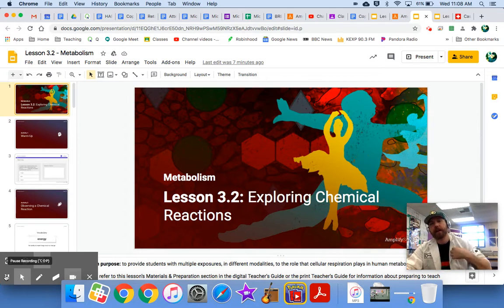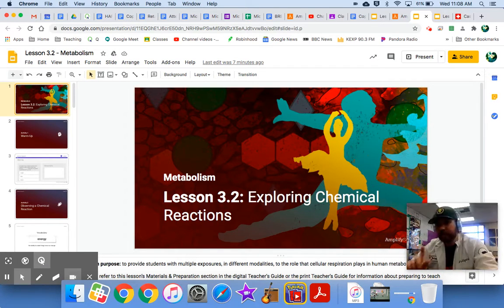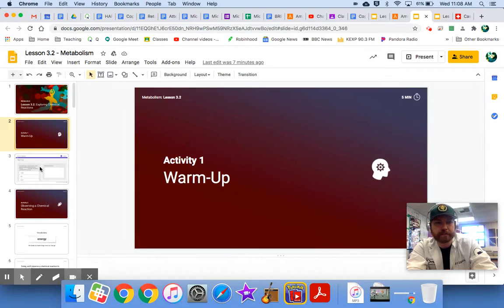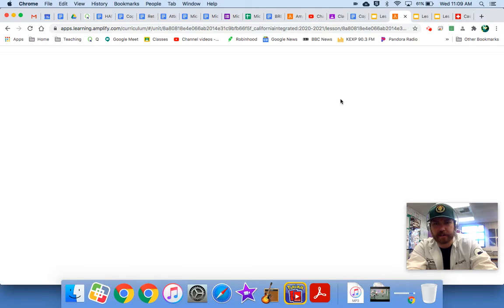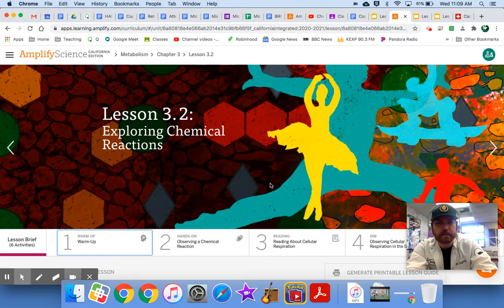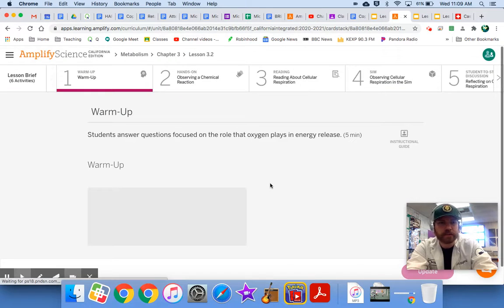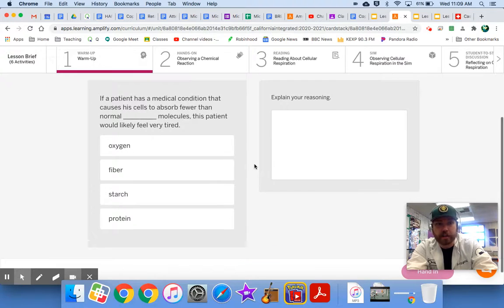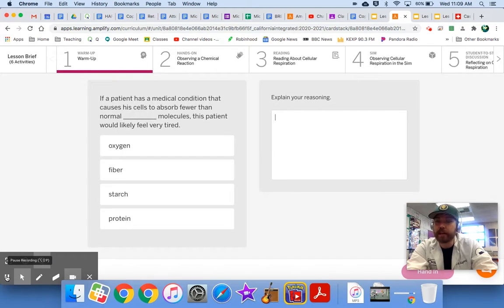You're going to experience it vicariously through me. You're going to still be able to make some observations and hopefully draw some conclusions from it. Before we do anything though, let's take a look at this warm-up, as we always do. I'm going to go ahead and jump into Amplify. It's a scenario question. If a patient has a medical condition that causes his cells to absorb fewer than normal molecules, this patient would likely feel very tired. Look at those answers, and you might think it could be this one, or it could be this one. Choose the best one. Which one you think makes the most sense? Which would be the best answer? Don't forget to explain your reasoning, please. That's always the most important part. And then, once you do that, come on back to me.